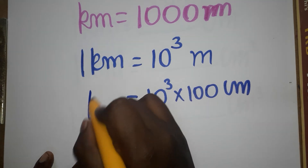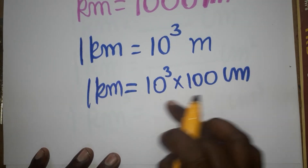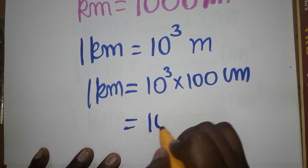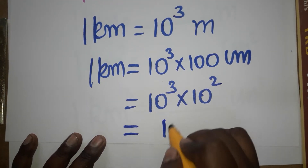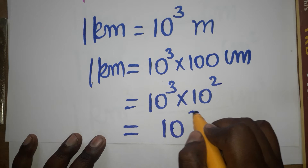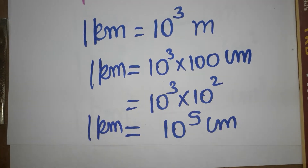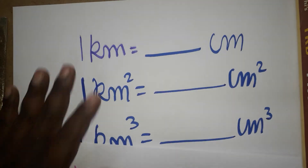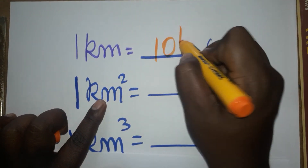So one kilometer equals 10 power 3 into 10 power 2, which gives us 10 power 5 centimeters. Therefore, one kilometer is equal to 10 power 5 centimeters.